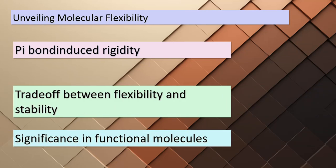We're about to uncover more about the intriguing effects of pi bonds. Pi bonds introduce rigidity into molecules due to their requirement for planar alignment. This rigidity, however, comes with a trade-off: while it limits flexibility, it also enhances stability. This balance between flexibility and stability is crucial in functional molecules. Think about the structural components of materials, the specificity of biological molecules, and the behavior of compounds in chemical reactions — all of these are influenced by the balance between rigidity and flexibility introduced by pi bonds.